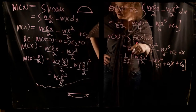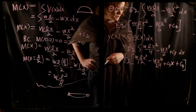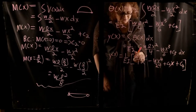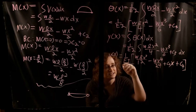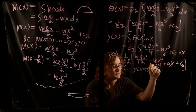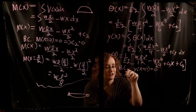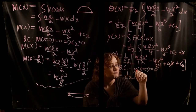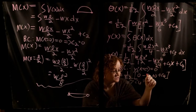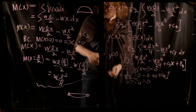I have two constants of integration, so I need two boundary conditions. First boundary condition: y at x = 0 equals 0. Substituting in, all terms vanish and we find C4 = 0. So our constant C4 drops away.